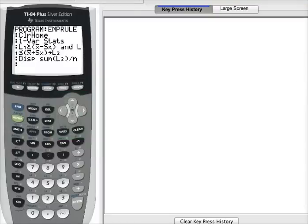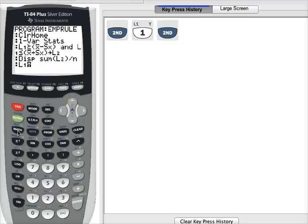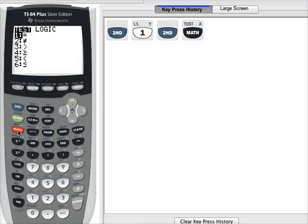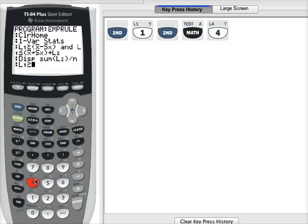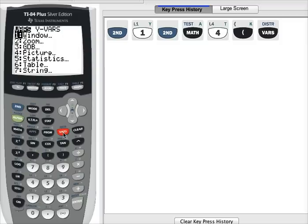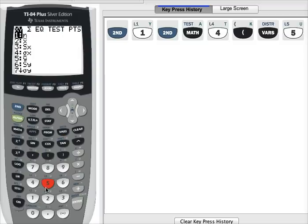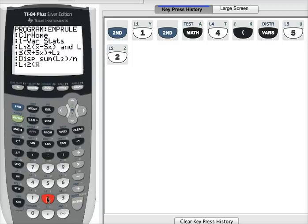So we need to once again start with list one, greater than or equal to. Second, math button, greater than or equal to is option number four. Let's open the parentheses. I need the mean minus two standard deviations. So variables, statistics, mean is option number two.